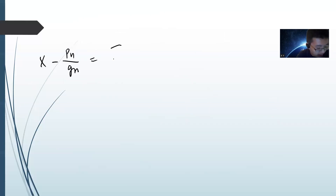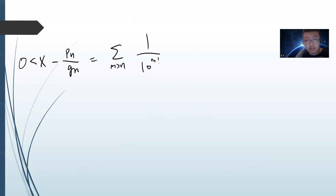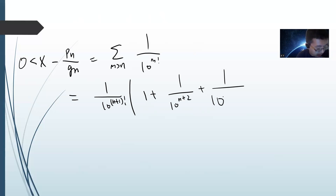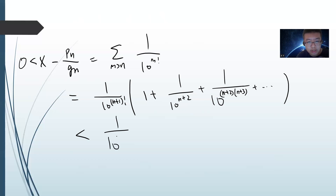If this is true, then |x - P_n/Q_n| = ∑_{m > n} 1/10^(m!), which is definitely greater than 0. I can write this as (1/10^((n+1)!)) × (1 + 1/10^((n+2)-(n+1)!) + ...), and obviously this is less than a geometric series.